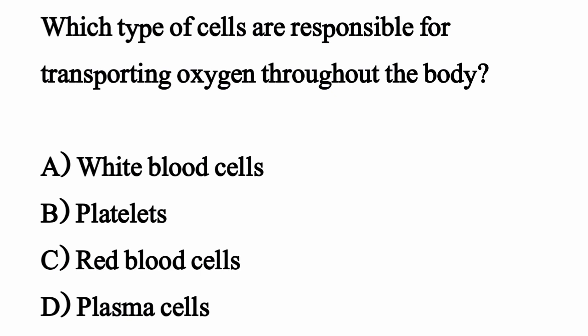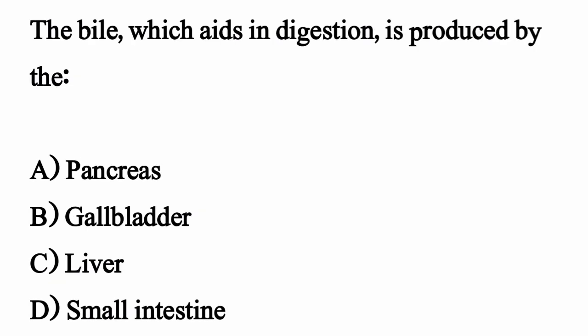Which type of cells are responsible for transporting oxygen throughout the body? The correct option is option C: Red blood cells. The bile which aids in digestion is produced by — option D.